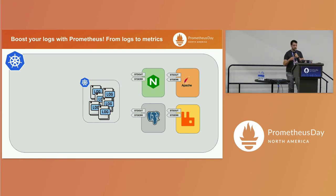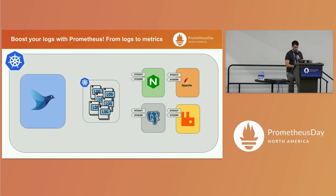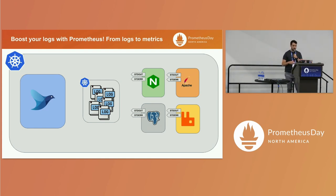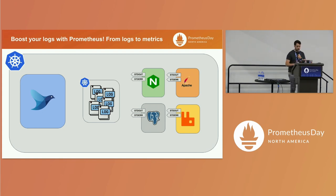One application we can use for this case is one deployed on every node as a DaemonSet. For this example, we are going to use FluentD. FluentD is very easy to configure and deploy in our clusters. If you don't want to make any specific configuration, we have a Helm chart, and with barely a few options we can deploy this application in our clusters.